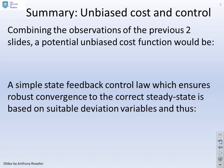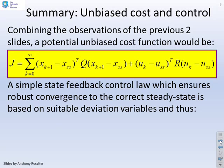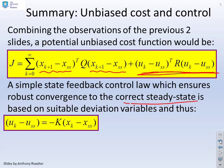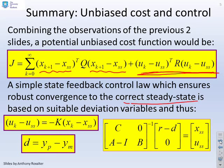We're going to combine these observations. We'll use a performance index based on the distances between the state and its steady state: (X_{K+1} minus X_SS) transposed Q (X_{K+1} minus X_SS), and a component based on the deviation variables in the input. This performance index will be zero if you are at the steady state. A simple state feedback which ensures robust convergence to the correct steady state is based on the same deviation variables: U_K minus U_SS equals minus K times X_K minus X_SS. Together, this gives a control law which contains integral action and gets you to the required steady state.